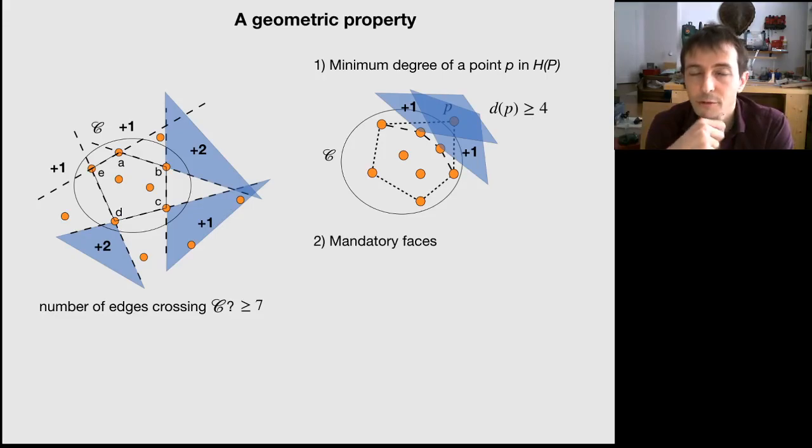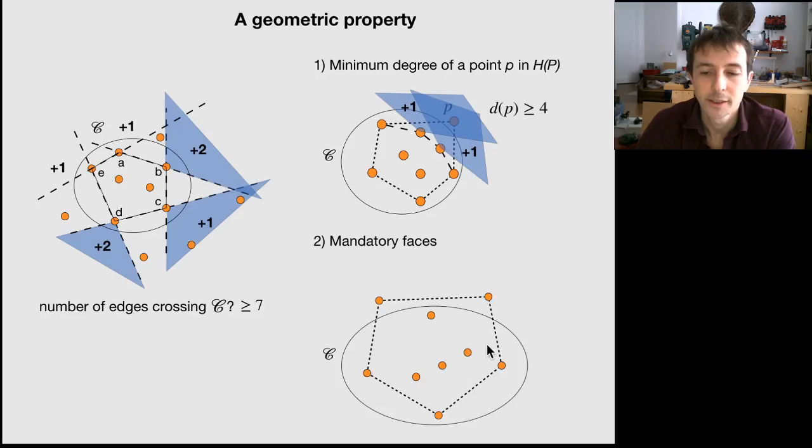Another consequence of this general property here is about mandatory faces. If you consider again our running example and you use this boundary C, what you can observe here is that there is a minimum of two edges crossing the boundary here.